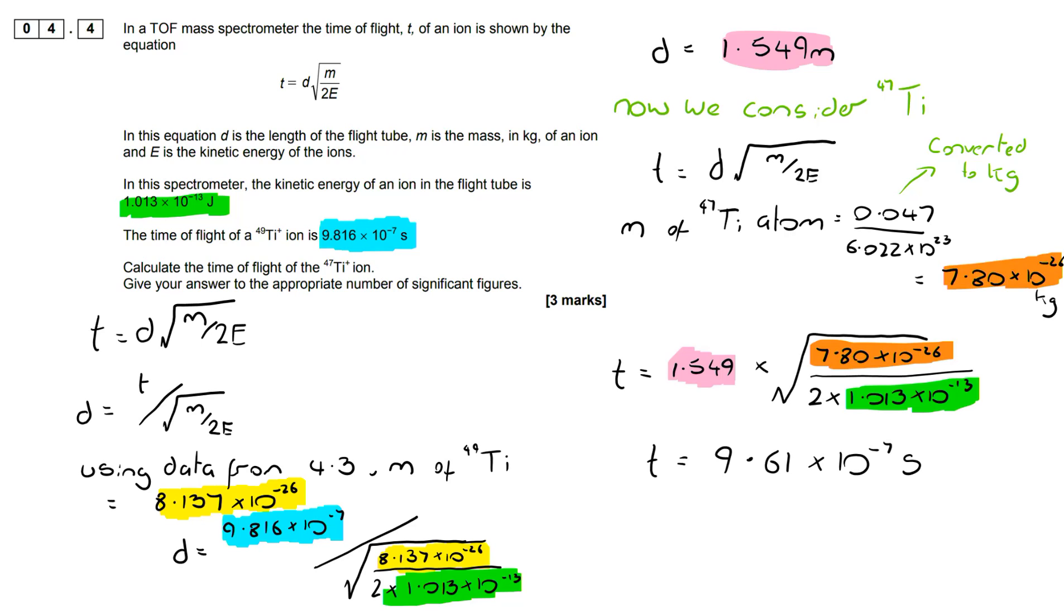So I can put that into the expression—the actual expression that we were given at the start of this question. It doesn't need to be rearranged. I've put that in. My kinetic energy is exactly the same as it was previously, so I include that within there. And I can now add d because the distance that these travel, the length of the flight tube, is going to be the same. They're happening in the same mass spectrometer.